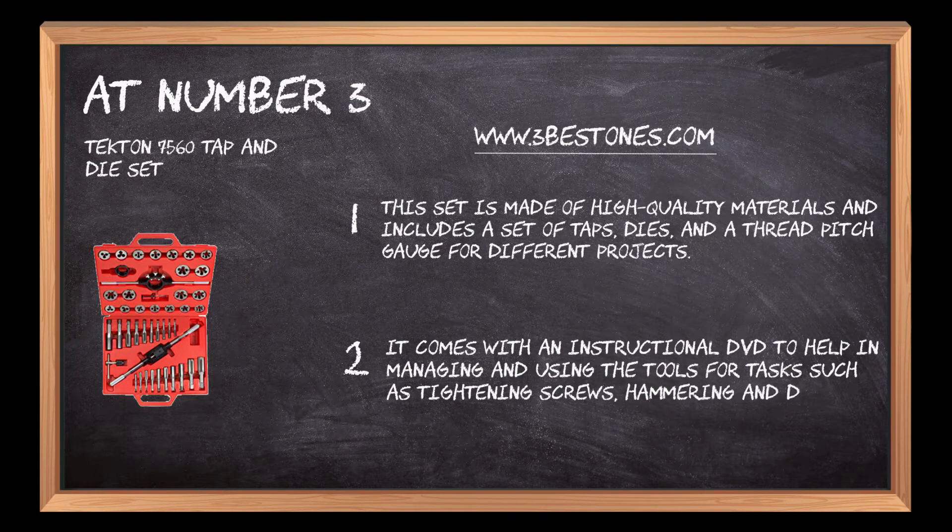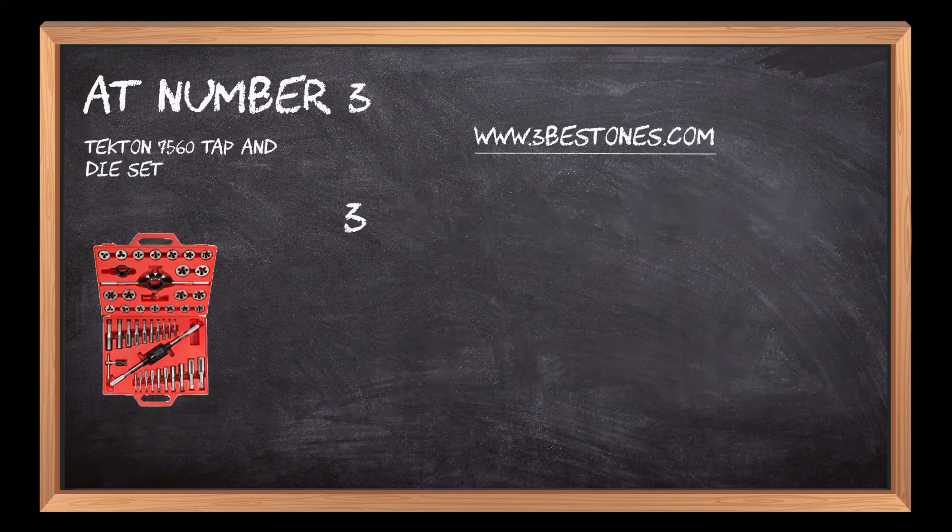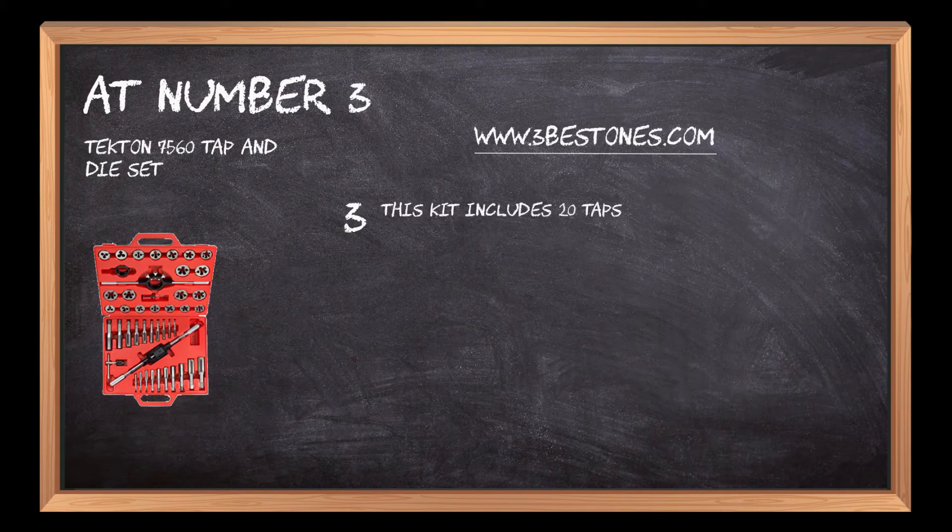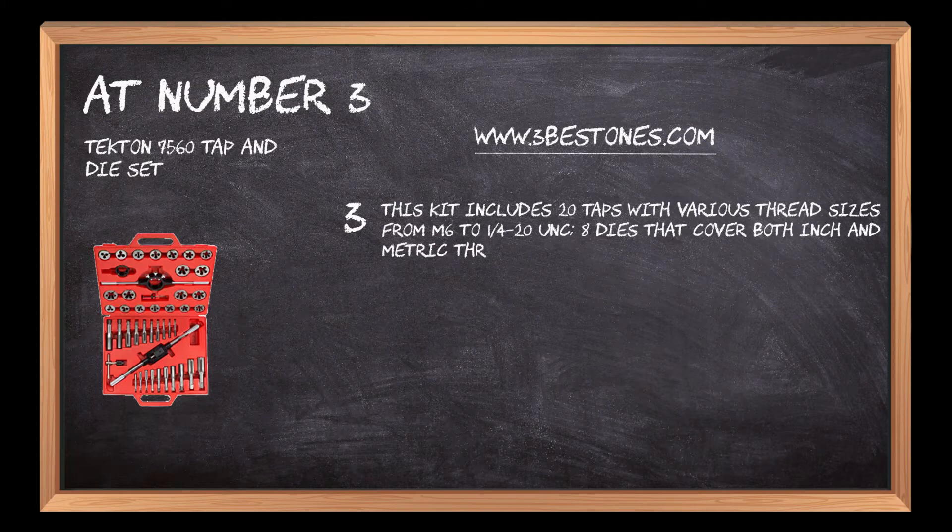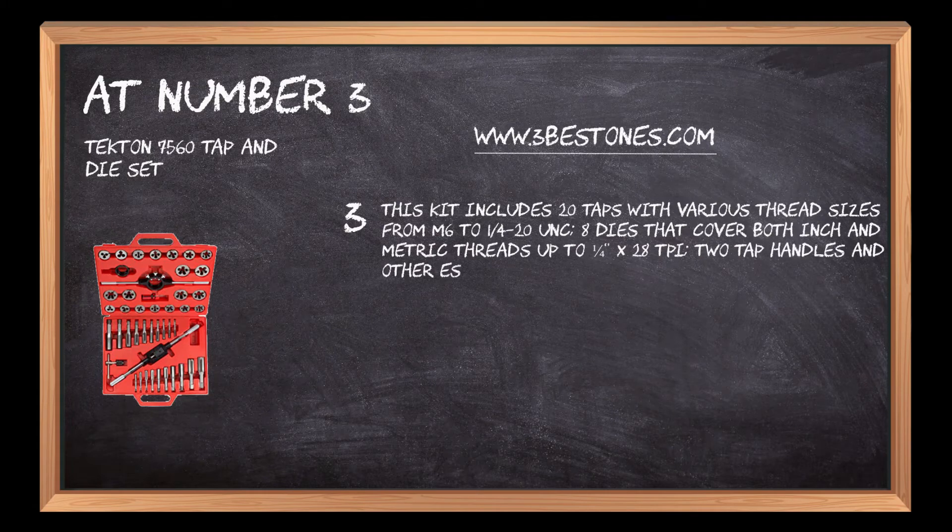This kit includes 20 taps with various thread sizes from M6 to 1/4-20 UNC, eight dies that cover both inch and metric threads up to 1/4 by 28 TPI, two tap handles, and other essentials.